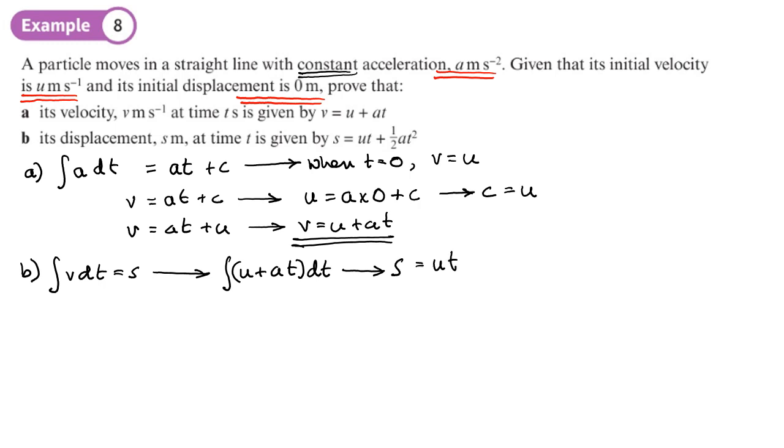s equals, well, u integrated becomes ut, and at integrated—we add one to the power, divide by the new power—so half at squared, plus c. So it's already looking like something we recognize: s equals ut plus half at squared plus c.